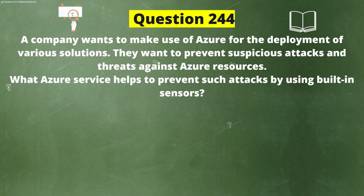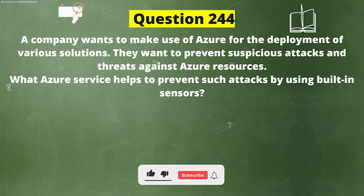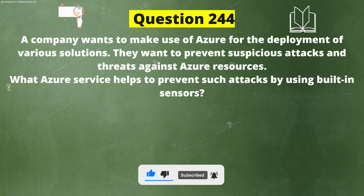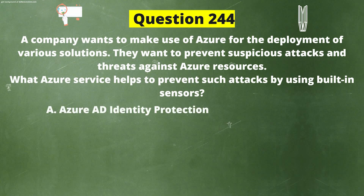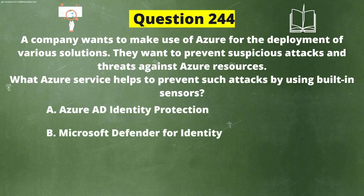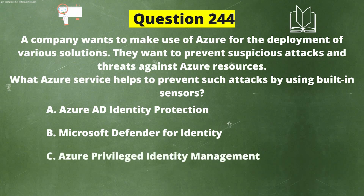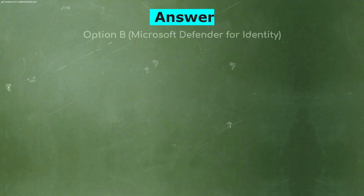Next question. A company wants to make use of Azure for the deployment of various solutions. They want to prevent suspicious attacks and threats against Azure resources. What Azure service helps to prevent such attacks by using built-in sensors? Option A: Azure AD Identity Protection. Option B: Microsoft Defender for Identity. Option C: Azure Privileged Identity Management. Option D: Azure DDoS attacks. The correct answer is Option B, Microsoft Defender for Identity.